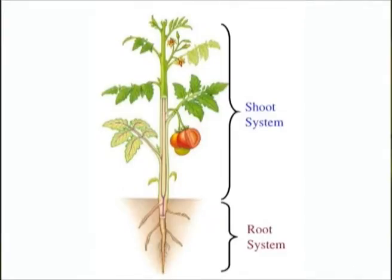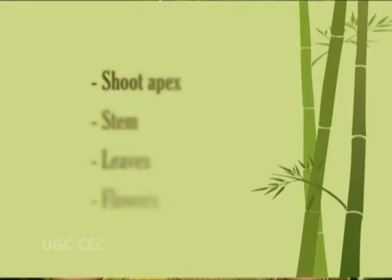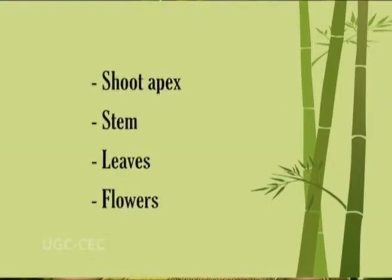The major organs which contribute to the shoot system are the shoot apex, the stem, the leaves, and the flowers. In this module, we will learn about the shoot apex and the stem in detail. The leaves and the flowers are discussed separately in other modules.